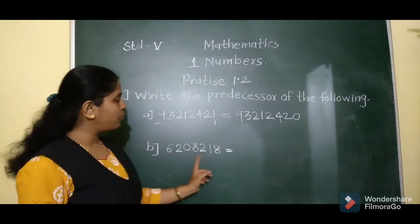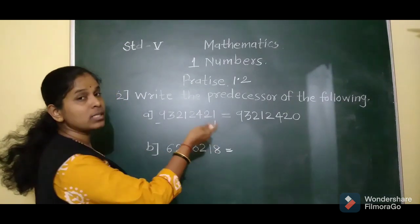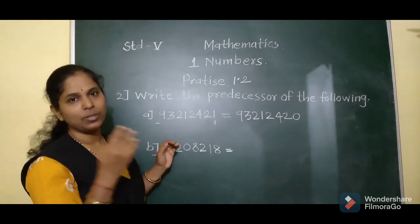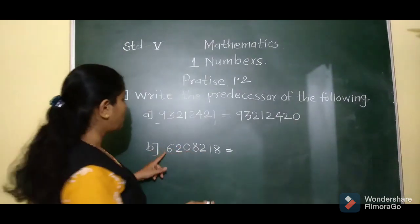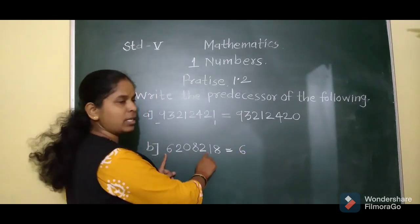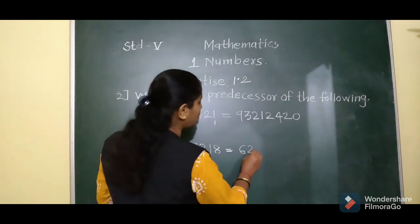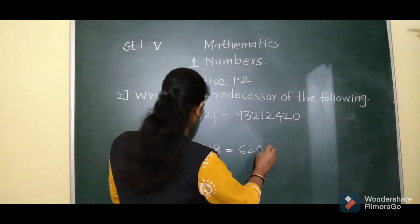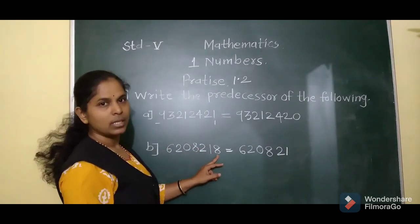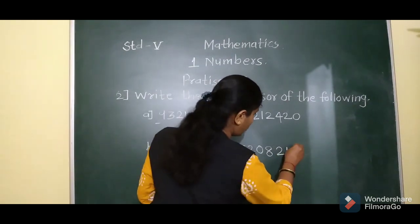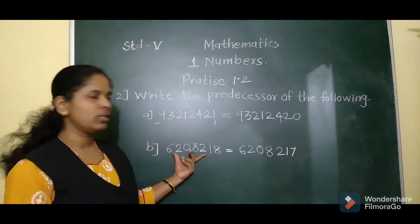For the next predecessor example, the 1's digit is 8. So 8 minus 1 is 7. We copy all other digits as they are and write 7 in the 1's place. This is the predecessor of the given number.